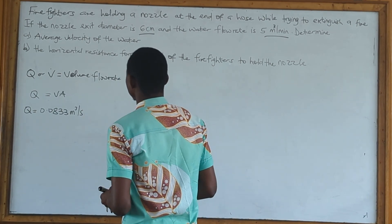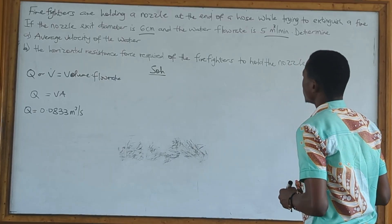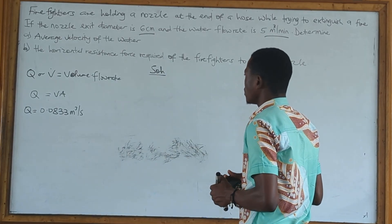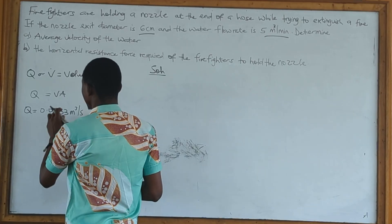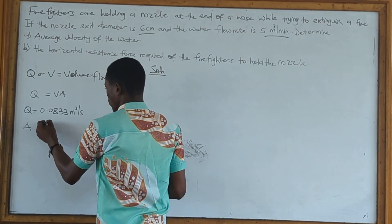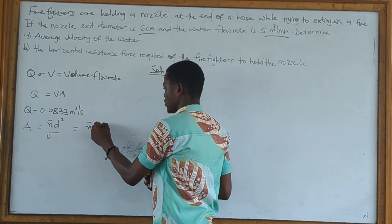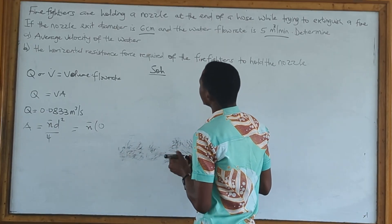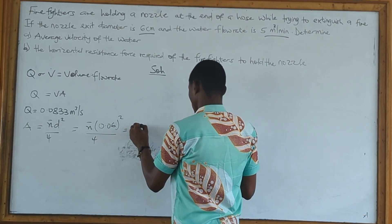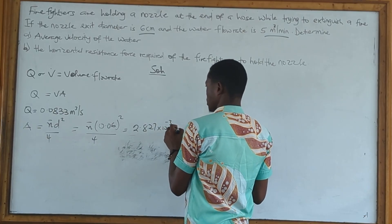Now we need to calculate the area. The area of the nozzle is taken to be the area of a circle, so that's πD² over 4. Our diameter is 6 centimeters, which is 0.06 meters. So the area is π times 0.06 squared all over 4, which gives us 2.827 times 10 to the power negative 3 meters squared.